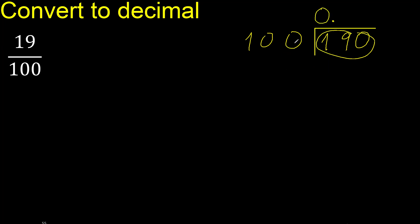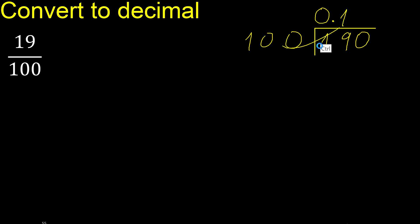190 is not less, therefore 100 multiply by which number is nearest to 190 but not greater. Multiply by 2 is 200, which is greater. Therefore multiply by 1 is 100. Subtract: 90. There is no number that goes down, therefore complete — always complete with 0.